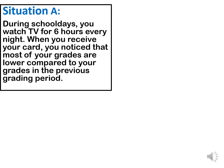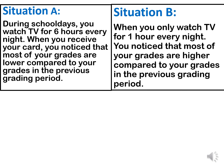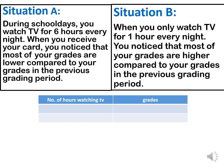Let us now have another situation. During school days, you watch TV for 6 hours every night. When you receive your card, you notice that most of your grades are lower compared to your grades in the previous grading period. But when you decrease the number of hours watching TV to 1 hour every night, you notice that most of your grades are higher. Putting the numbers in a table of values, we have two variables: the number of hours watching TV as the input or independent variable, and grades as the output or dependent variable.